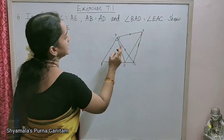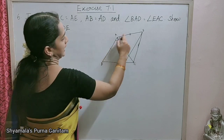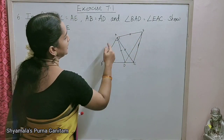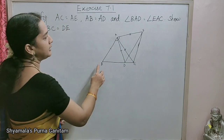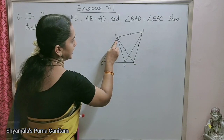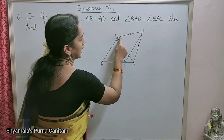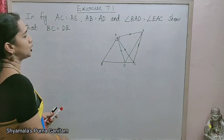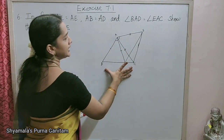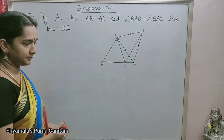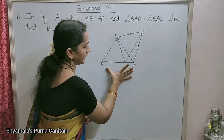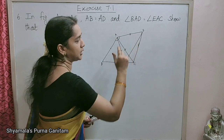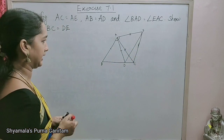Here, AC is equal to AE — these two line segments are equal. And AB is equal to AD. Angle BAD is equal to angle EAC — these two angles are equal. Show that BC is equal to DE. Since we are asked to prove that BC is equal to DE, we will take that triangle.